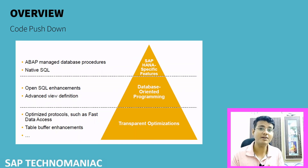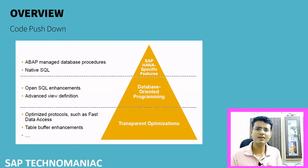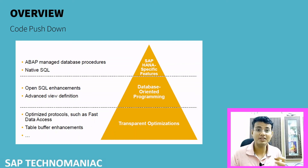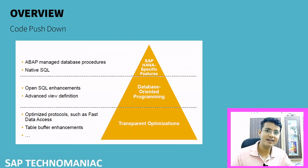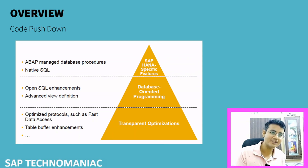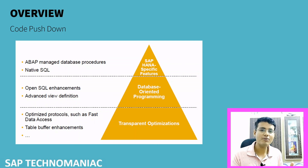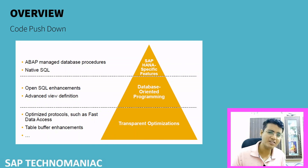If we want to do even more, we can write native SQL — database-specific language — directly in ABAP using utility classes. There is a much better framework now compared to before. Additionally, we can create database procedures in ABAP itself, called AMDP — ABAP Managed Database Procedures — and utilize the full power of the database directly from ABAP.